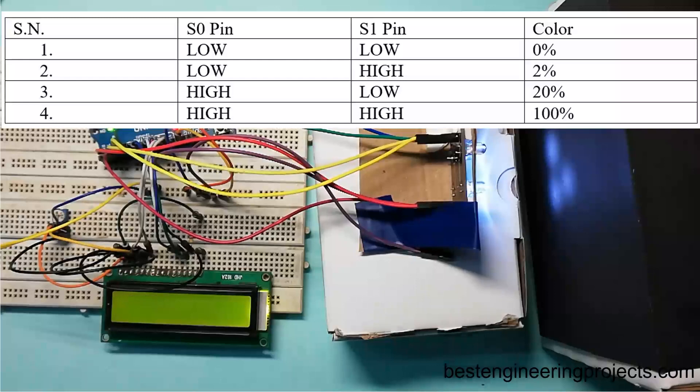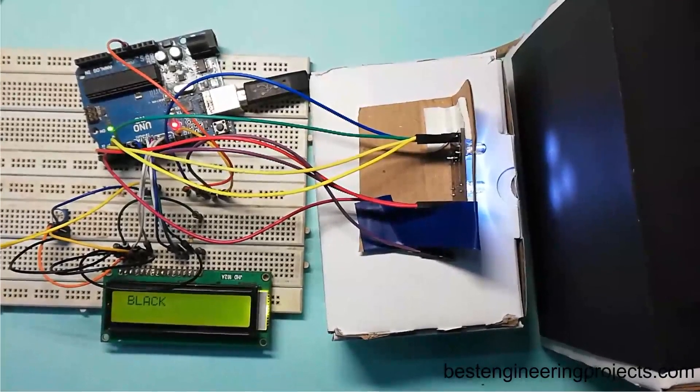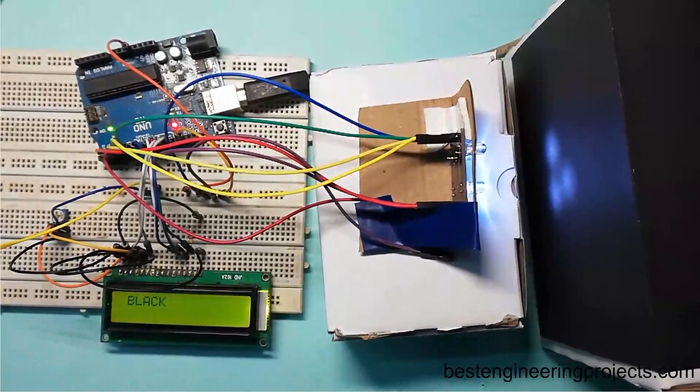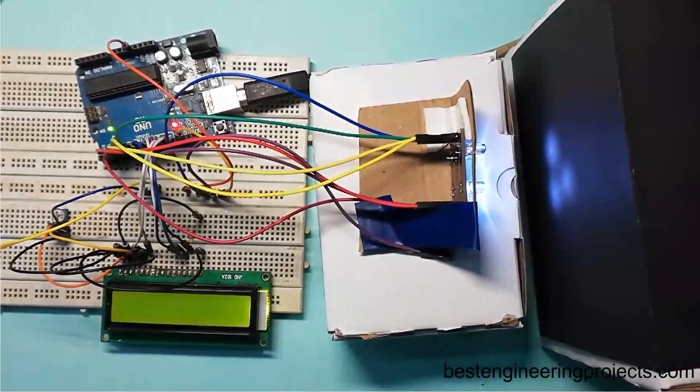If we make S0 pin low and S1 pin low, then working frequency will be 0%. If we make pin S0 low and S1 high, then working frequency will be 2%. If we make S0 pin high and S1 pin low, then working frequency will be 20%. Similarly, if we make both pins high, S0 pin high and S1 pin high, then working frequency will be 100%. For this project, the frequency is set to 20% as you can see in the software code.